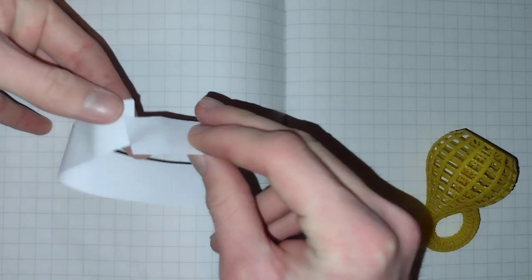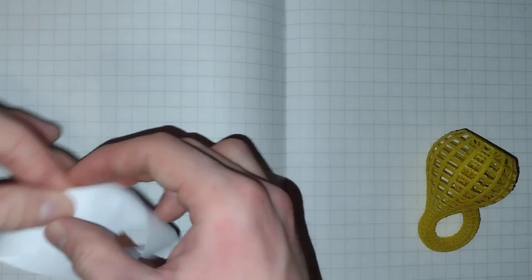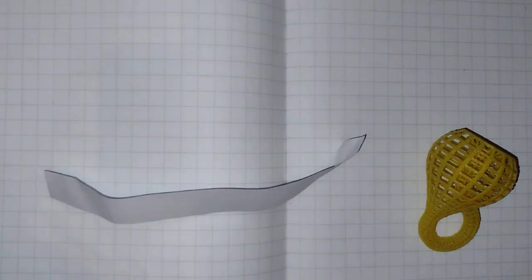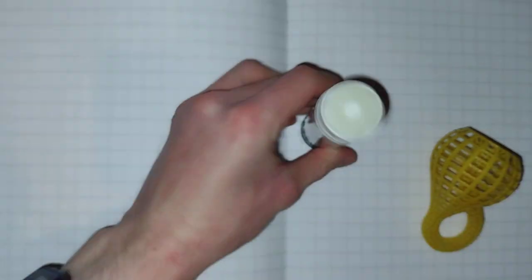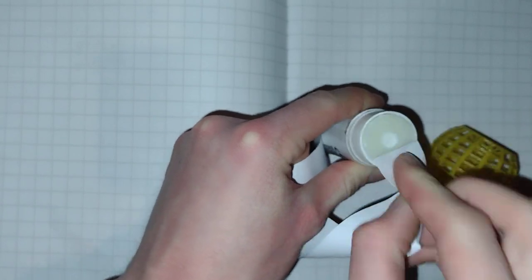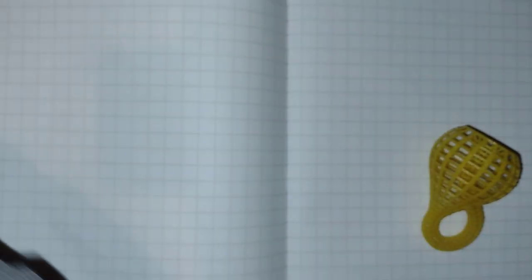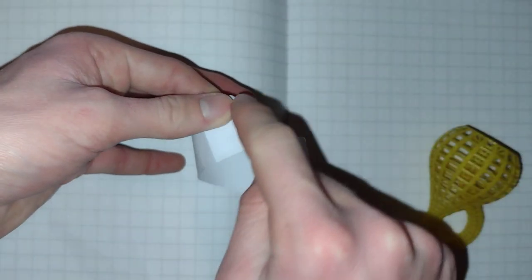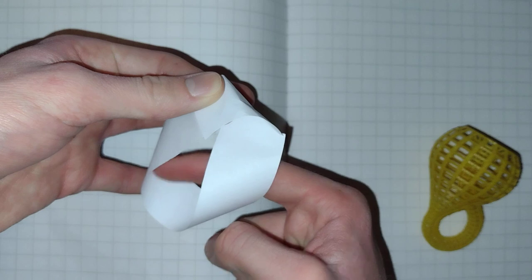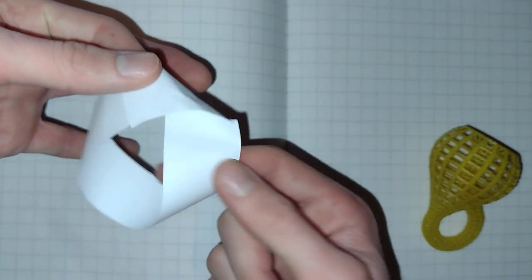If I make one half loop, one half turn, and I glue that down. I'm going to put a bit of glue there. Simply stick that down like so.